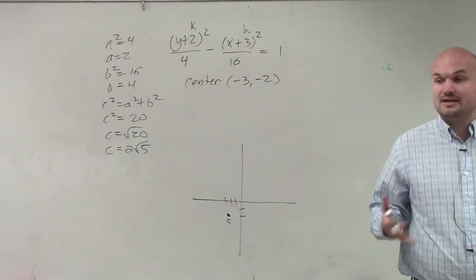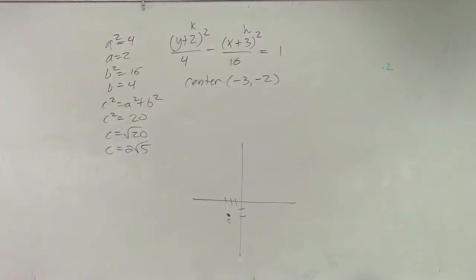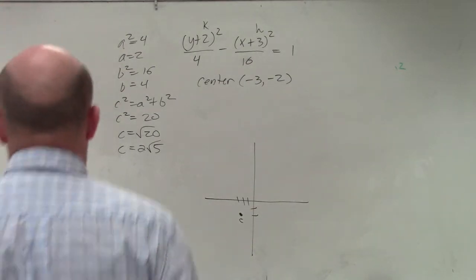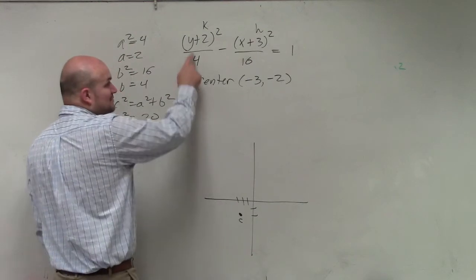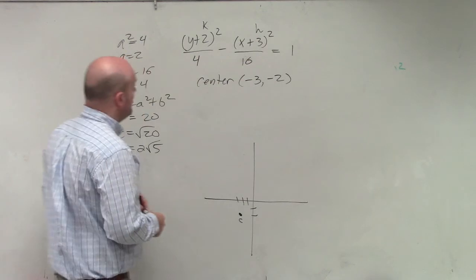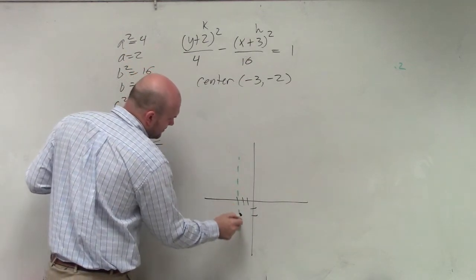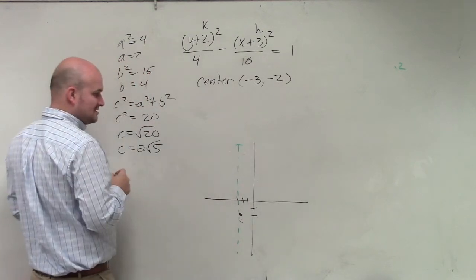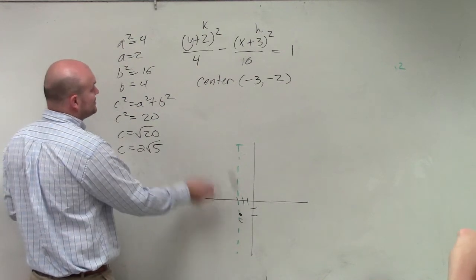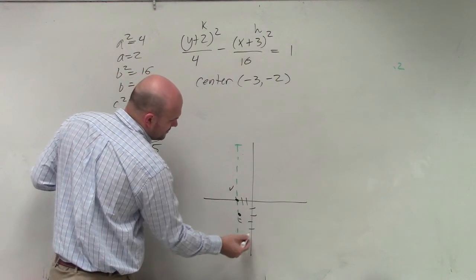Now, the next thing I want to do, since my center is not at the origin, the next thing I'm going to want to do is I'm going to want to label my transverse axis. So since my a squared is under my y, did I last two? I did another vertical one last time, did I? All right, we're doing two in a row. You have a vertical transverse axis, correct? So the distance from my center to my vertices is 2. So I'll go up 2, and I'll go down 2.